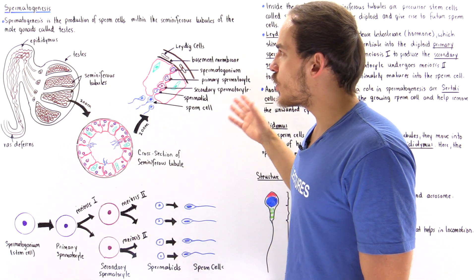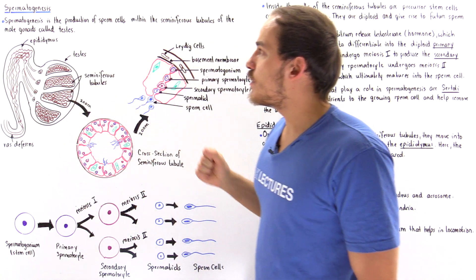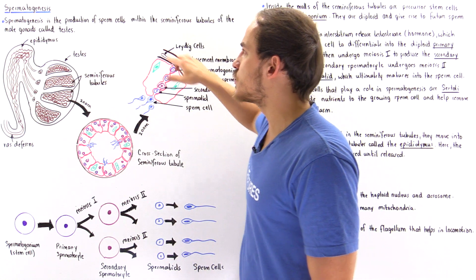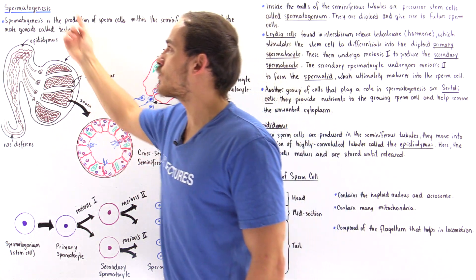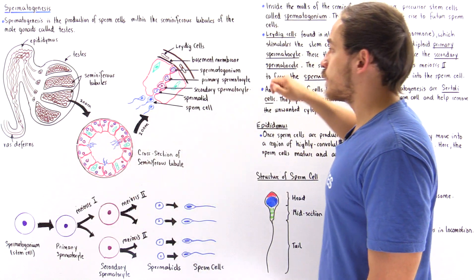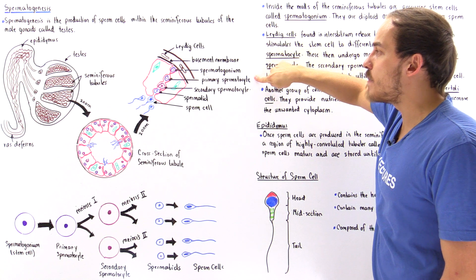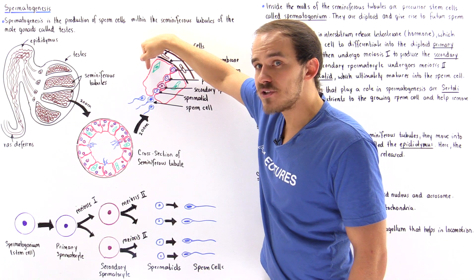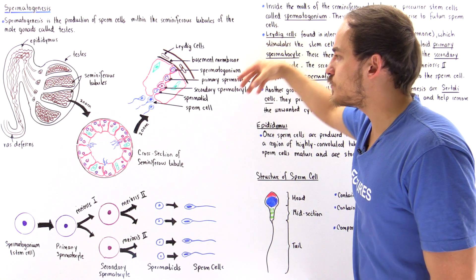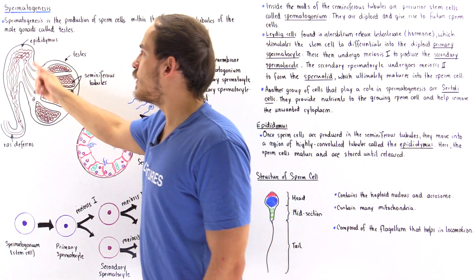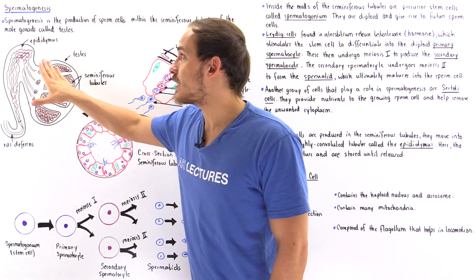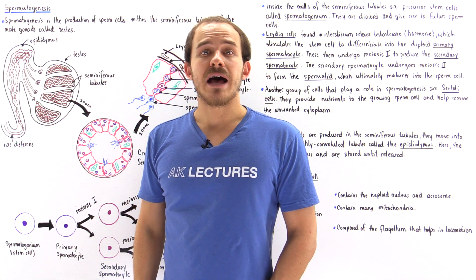In summary, inside the male gonads — our testes — we have seminiferous tubules where spermatogenesis takes place. Leydig cells produce testosterone, stimulating the differentiation of spermatogonium into primary spermatocytes. With the help of Sertoli cells, which provide nutrients and remove cytoplasm, the primary spermatocytes eventually produce sperm cells that move into the epididymis, where they mature and are stored until released to the outside environment.